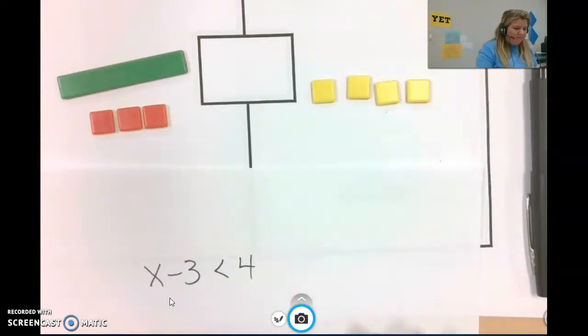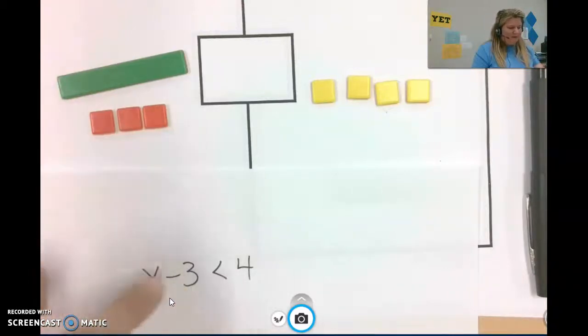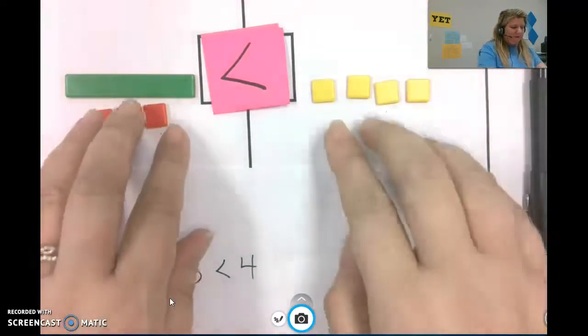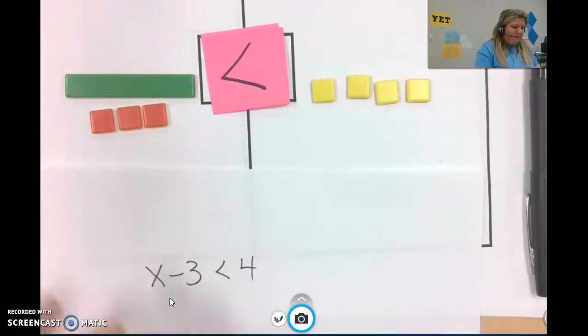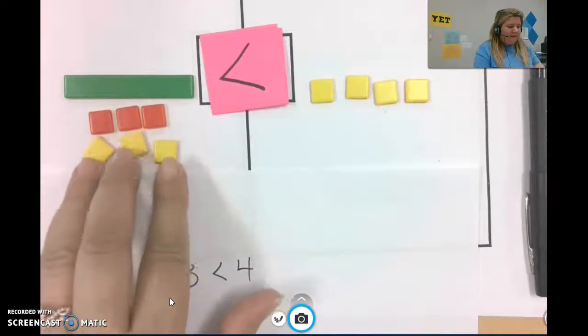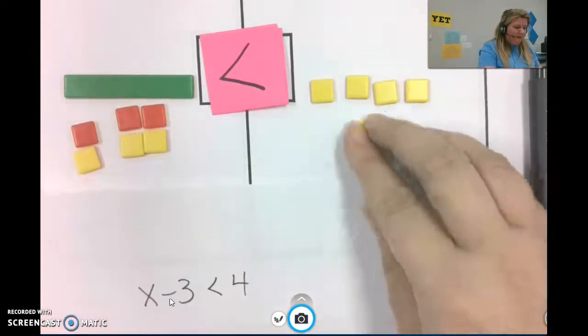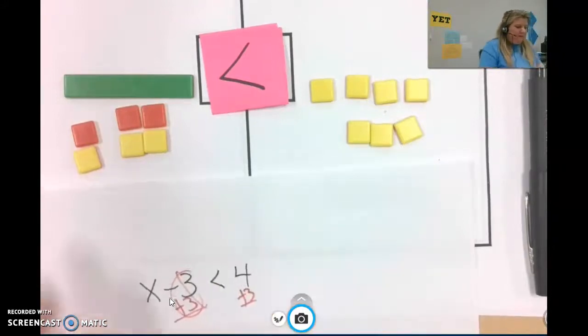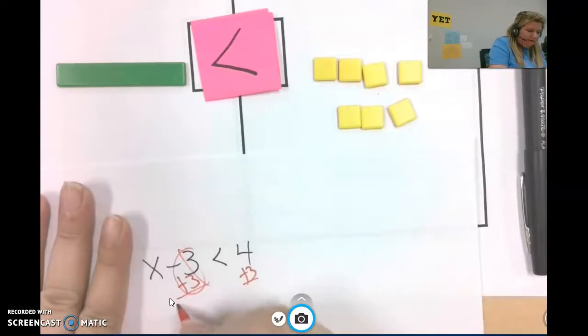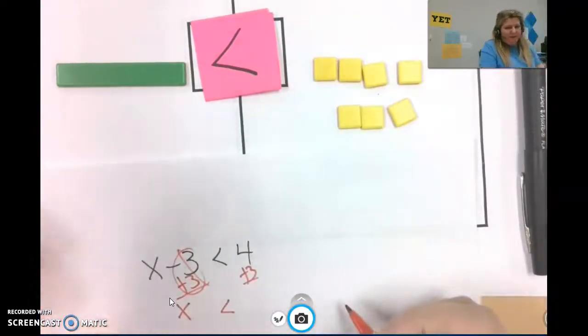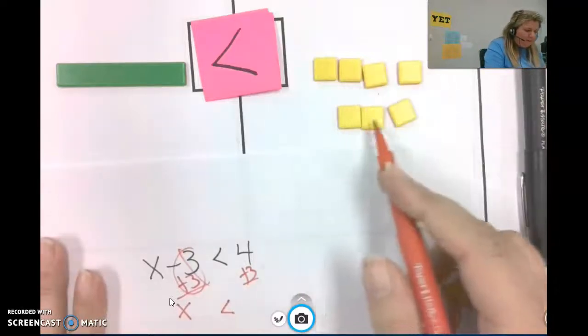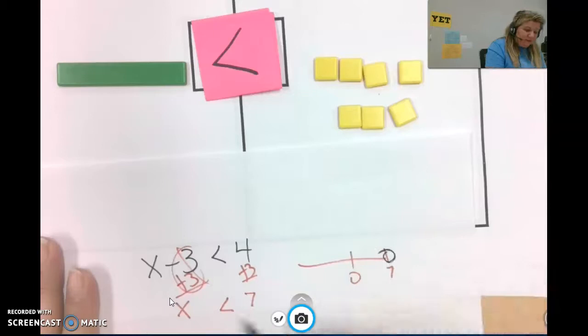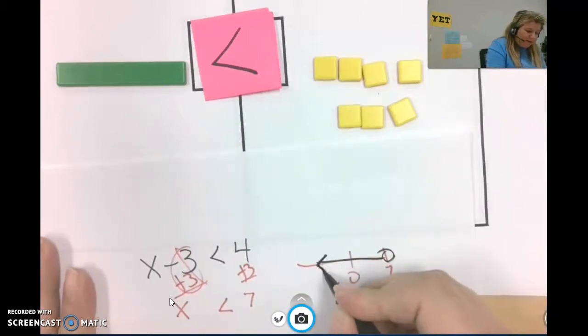We have x minus 3 less than 4. So x and 3 negatives less than 4. So I'm trying to isolate the variable. I would need to take away 3 negatives, but I don't have 3 negatives. So another way to isolate the variable would be if I made 0 pairs out of these. So I would add 3 to each side. On paper it looks like this. So these 0 pairs. And I'm left with x less than, because I didn't reverse it, I didn't flip them over, 7. 4 plus 3, 7. All right. And then here's the 7. I'm not including 7 because it's not or equal to. I'm just including the numbers that are less than 7.